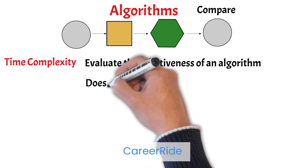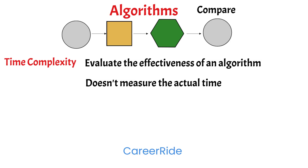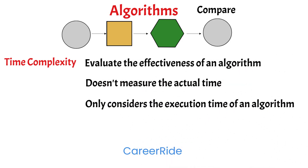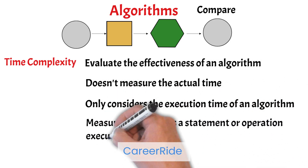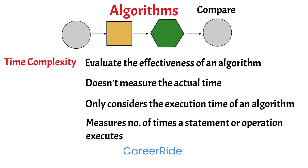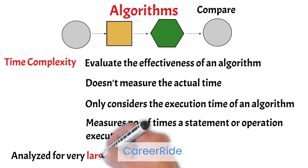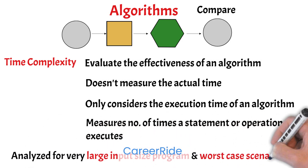Time complexity doesn't measure the actual time required to execute code in nanoseconds or milliseconds, because that is machine dependent and depends on factors such as hardware, operating system, and processors. Time complexity only considers the execution time of an algorithm — it measures the number of times a statement or operation executes. Time complexity is mostly analyzed for very large input sizes and worst-case scenarios.